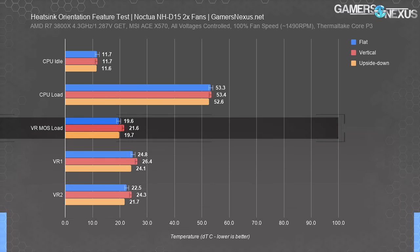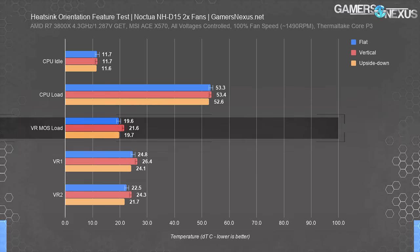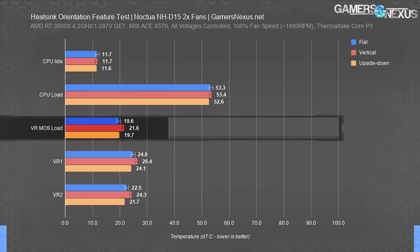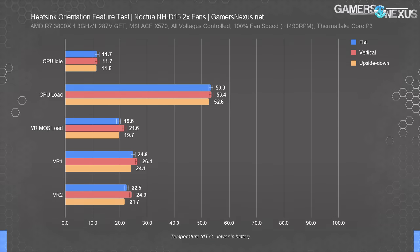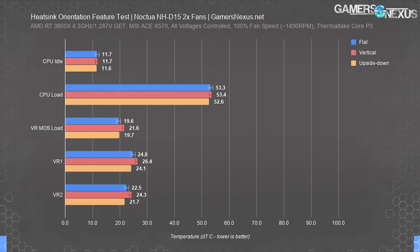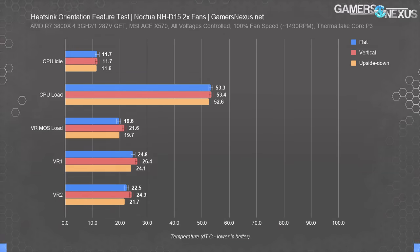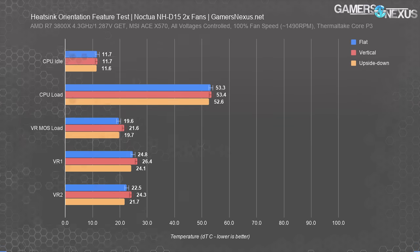VRM temperatures showed identical thermal performance between the flat and upside-down results. The vertical results are marginally higher, but as these are not cooled by the heatsink directly, it falls outside the test scope and starts to bring the motherboard aspect into consideration.